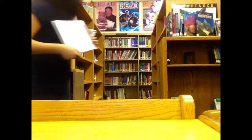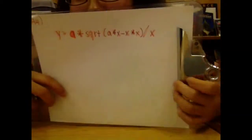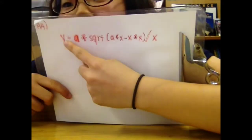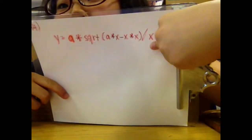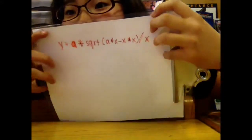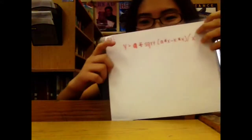The time is up. Follow along carefully to see whether or not your answer is accurate. y equals a times the square root of a times x minus x squared, divided by x.